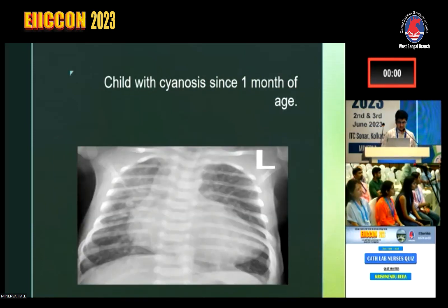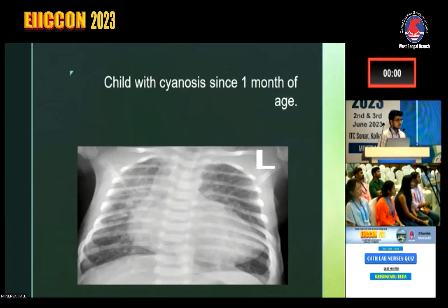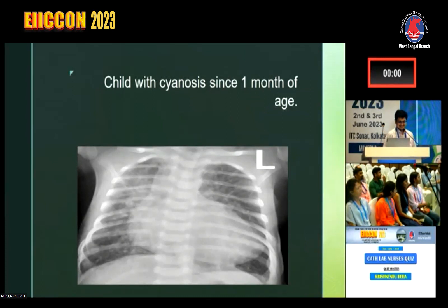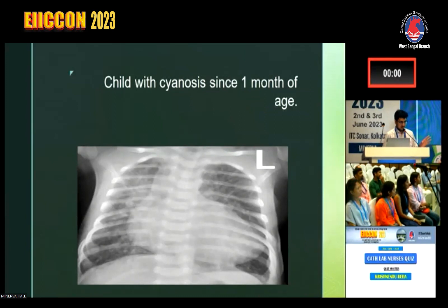What is this? A child with cyanosis since one month of age. This is a classical egg-on-side X-ray — transposition of great arteries.